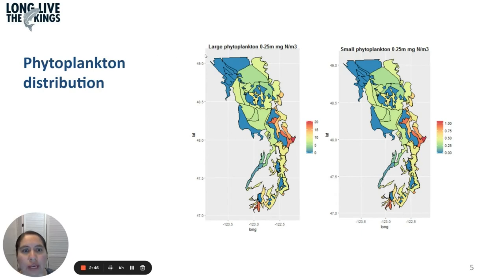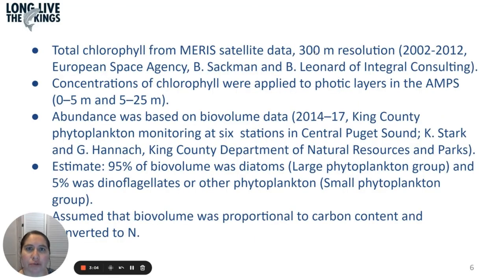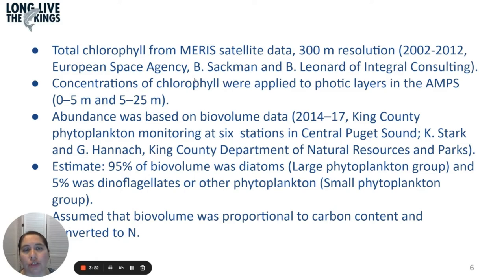In the Atlantis model we have to specify spatial distribution for all functional groups. This shows the distribution for both large and small phytoplankton in milligrams of nitrogen per cubic meter — the model uses nitrogen as its unit. To derive those maps, we used total chlorophyll from VIIRS satellite data at 300-meter resolution from 2002 to 2012, deriving chlorophyll concentrations and applying them to the two top depth layers of Atlantis — the photic layers from 0 to 5 meters and 5 to 25 meters.